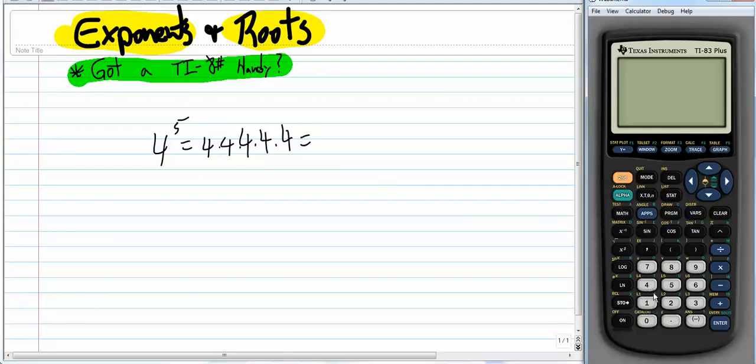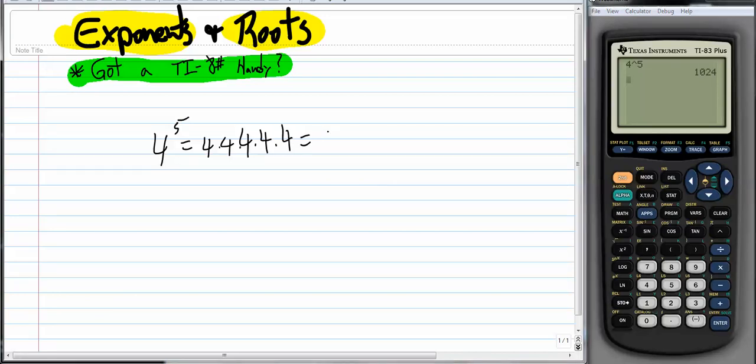So you go to your calculator and you put in 4. I've got to restart my calculator. You put in your 4, and then this little hat thing, this little carat here, that's to the power of. So 4 to the 5th power, and we get 1,024.